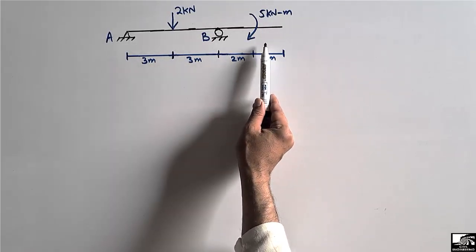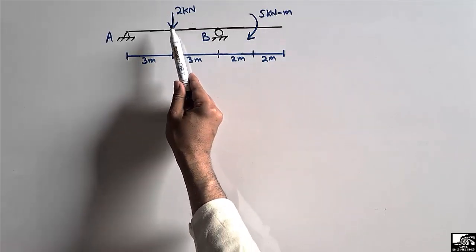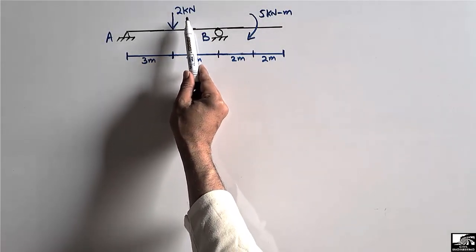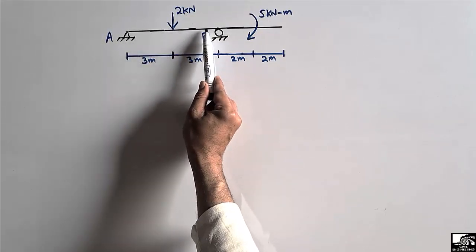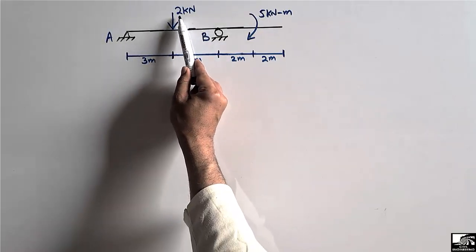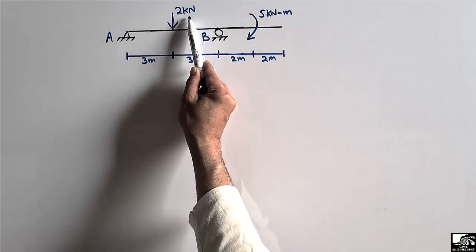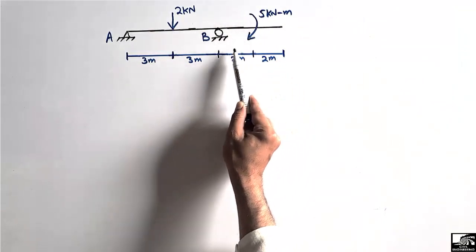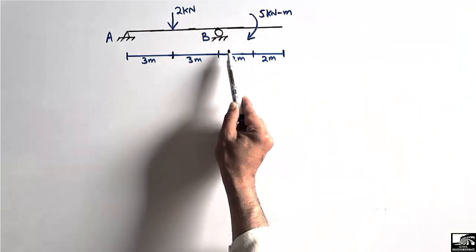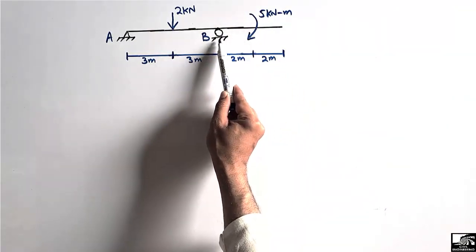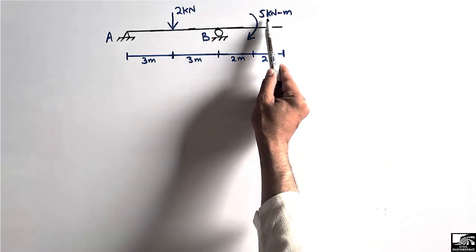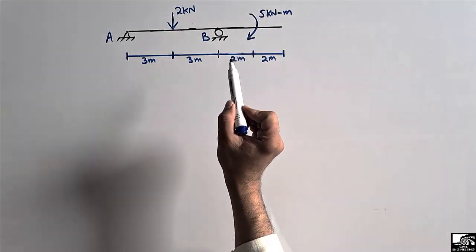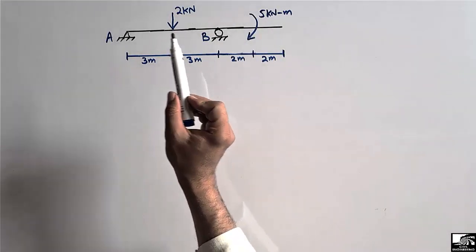There are two types of forces acting on this beam. One is the concentrated load acting at the center of this portion of the beam with a magnitude of 2 kilonewtons, and there is also a moment acting at a distance of 2 meters from the roller support with a magnitude of 5 kilonewton meters.